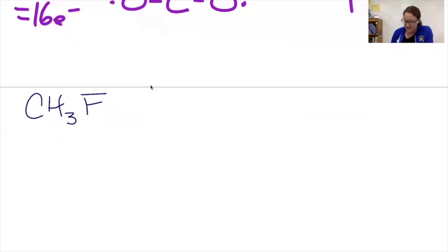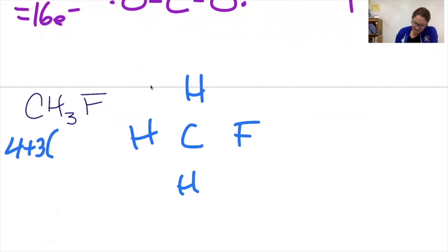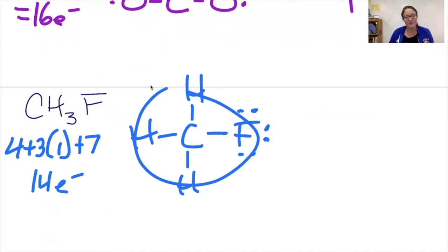Our last example, CH3F. Carbon's in the middle. Four plus three times one plus seven. I have a total of 14 electrons to use. I can't put any more on the hydrogens or the carbon, so they're going to go on the fluorine. Are there lone pairs on the central atom? No. But my outside elements aren't all the same element. So this is going to give me a polar molecule.